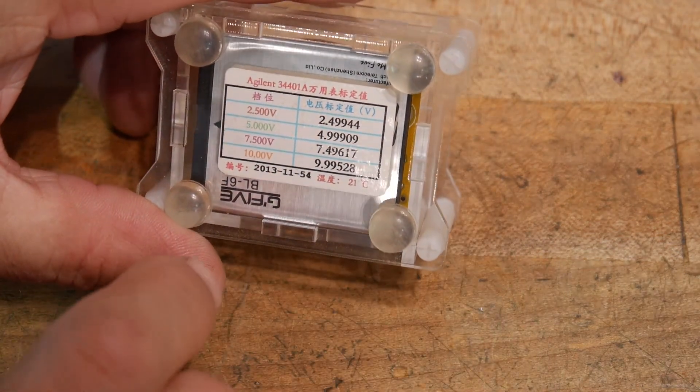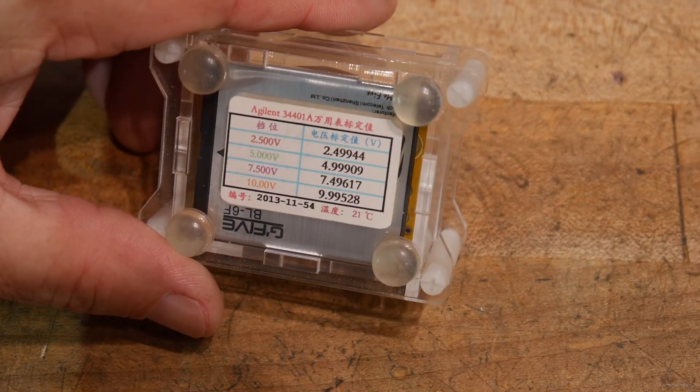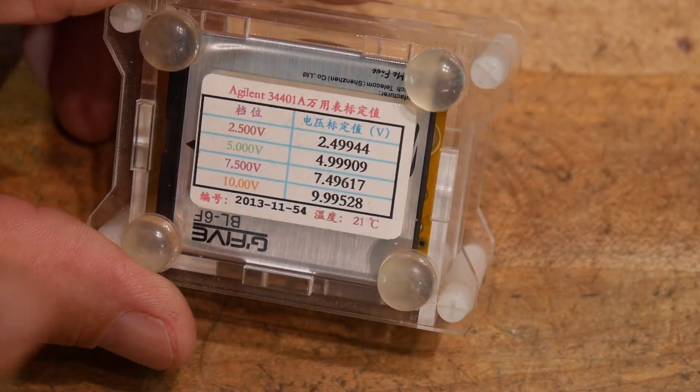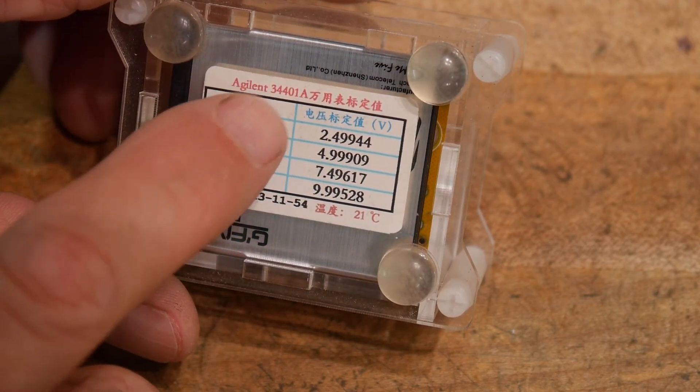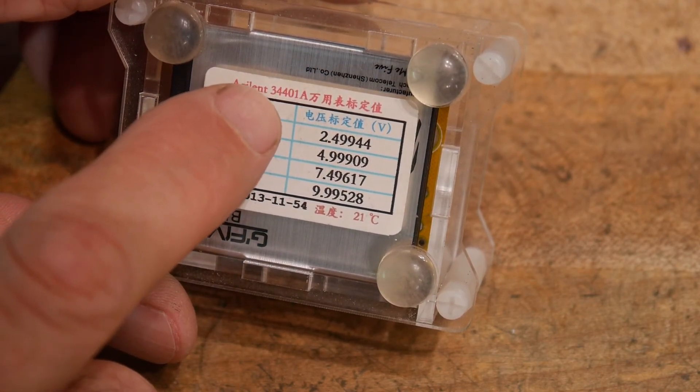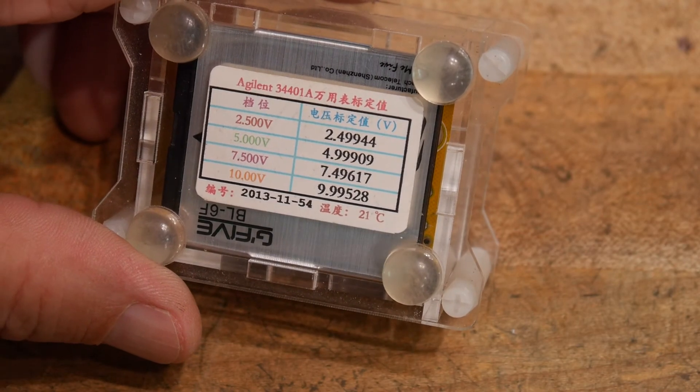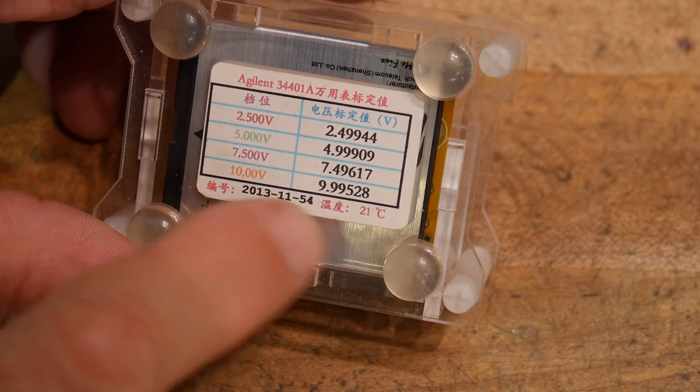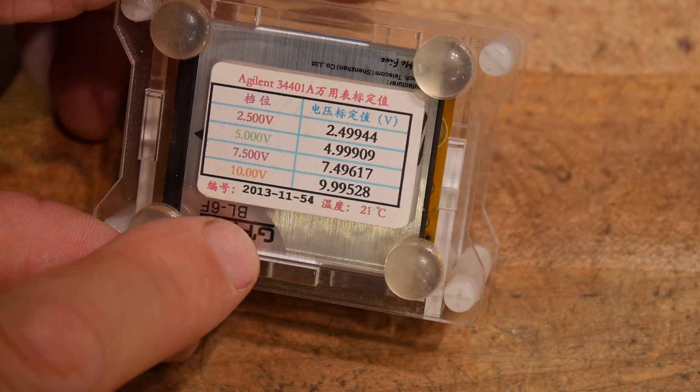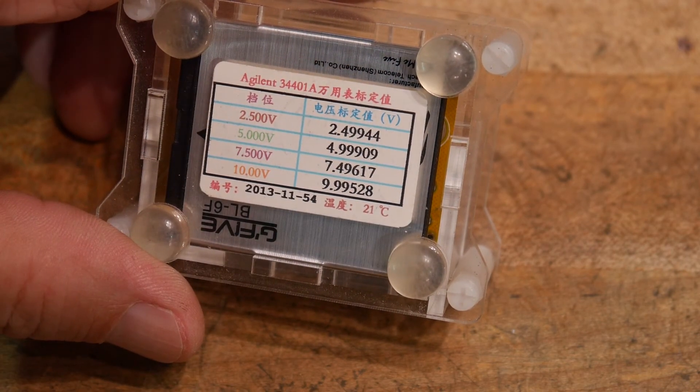The seller measured this particular device with an Agilent 34401A, that's the meter that I have. And this is the date that he measured it at 21 degrees C, and these are the voltages that he got.